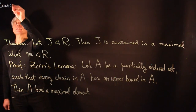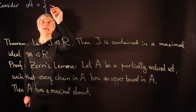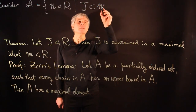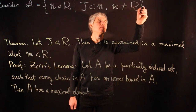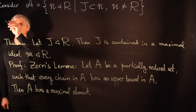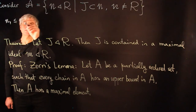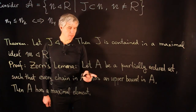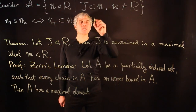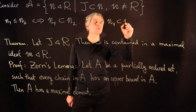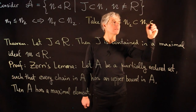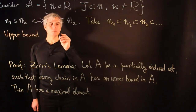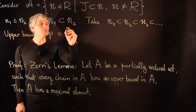To prove the theorem on existence of maximal ideals, we consider the set A of ideals N in the ring R such that J is contained inside N and N is not equal to R. This set is partially ordered by inclusion: N₁ ≤ N₂ if and only if N₁ ⊆ N₂. To apply Zorn's lemma we must show every chain has an upper bound. Take a chain N₁ ⊆ N₂ ⊆ N₃ ⋯ and construct the upper bound P as the union from k = 1 to infinity of these ideals N_k.